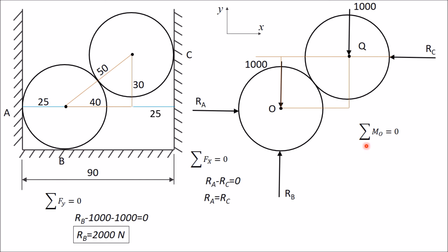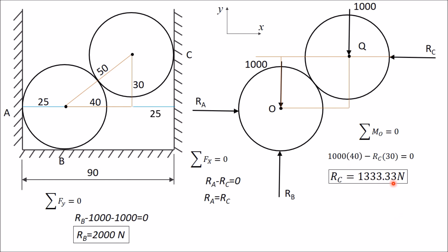Applying ΣMo = 0, taking clockwise as positive: the 1000 Newton force creates a clockwise moment of 1000 × 40, and RC creates an anti-clockwise moment of RC × 30. So 1000 × 40 − RC × 30 = 0, giving RC = 1333.33 Newton. Wait — 40000/30 = 1333.33 Newton. Substituting back, RA = RC = 1333.33 Newton. So RA = RB and RC are now fully determined.